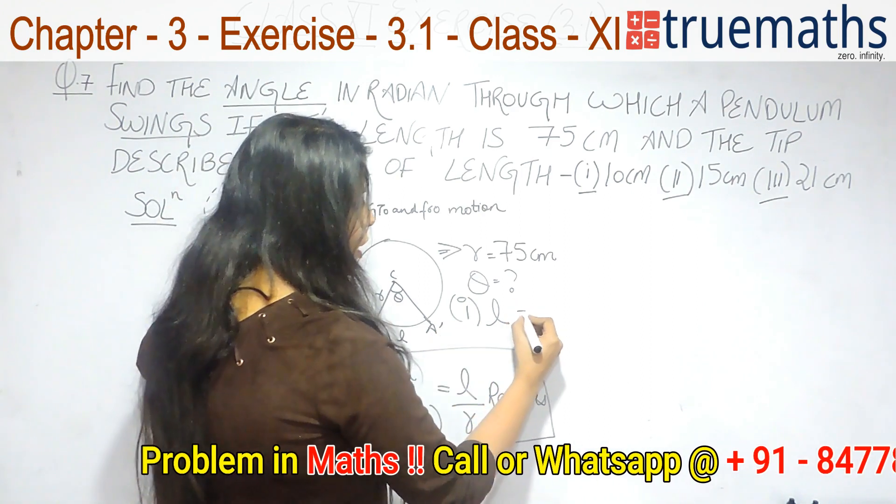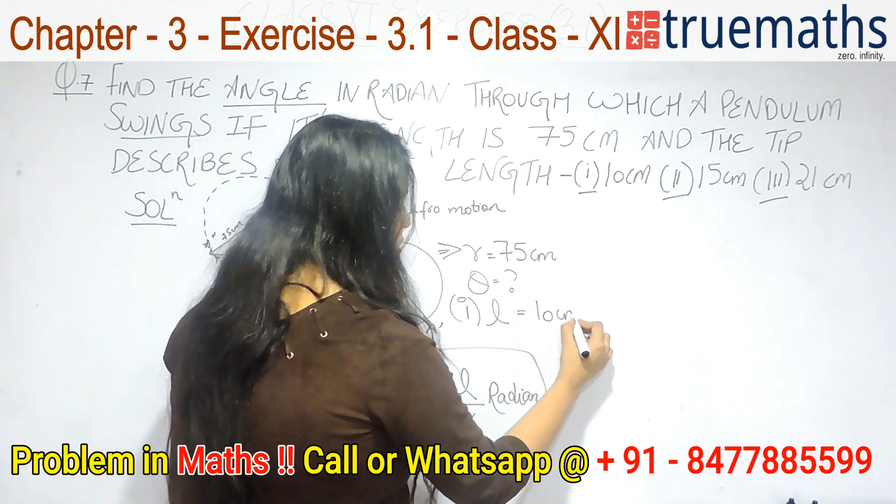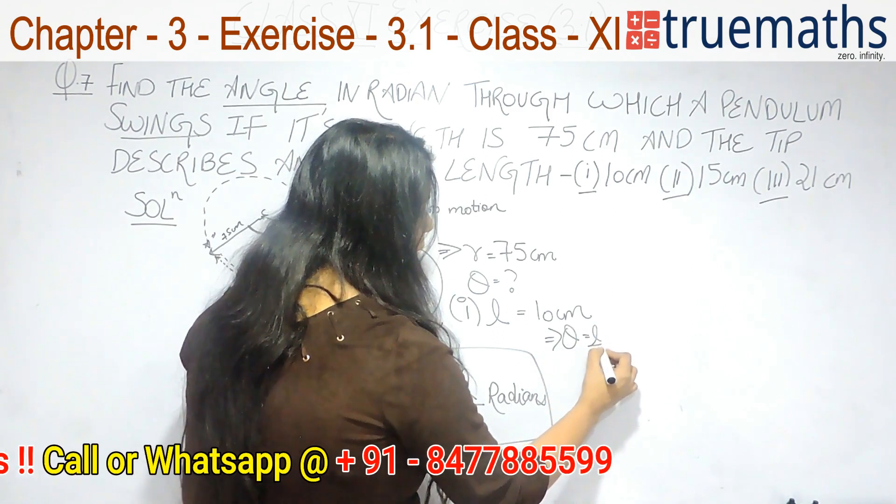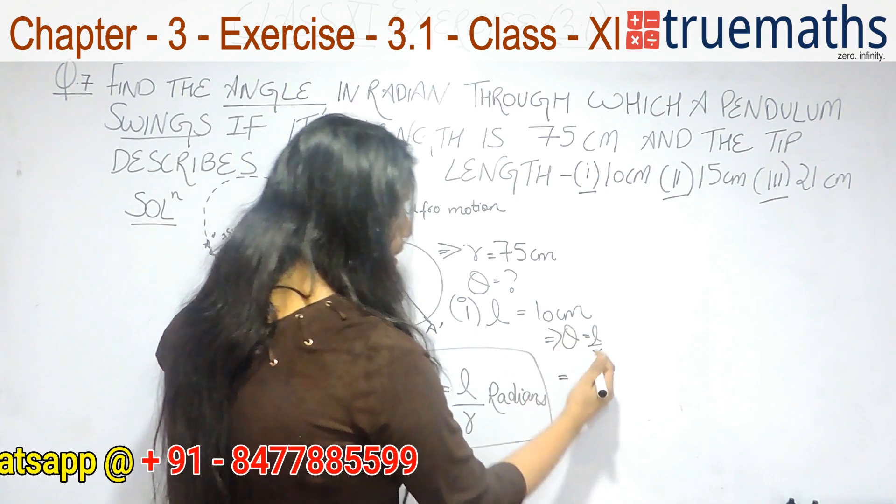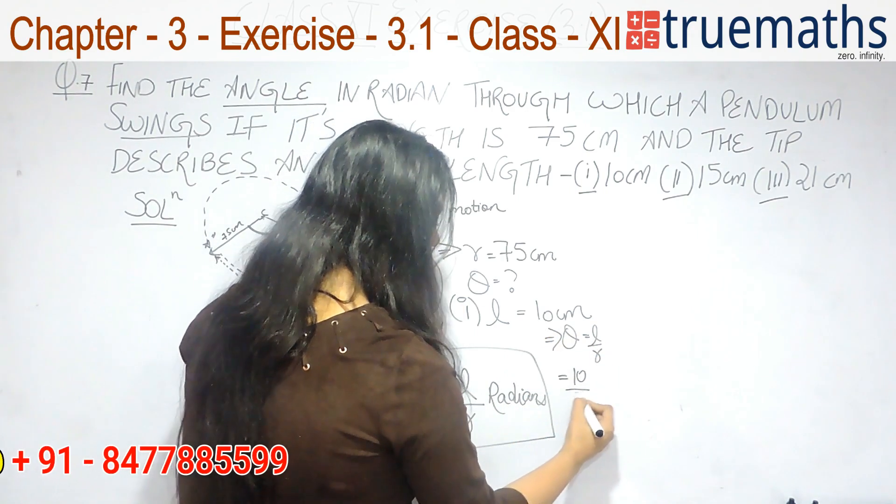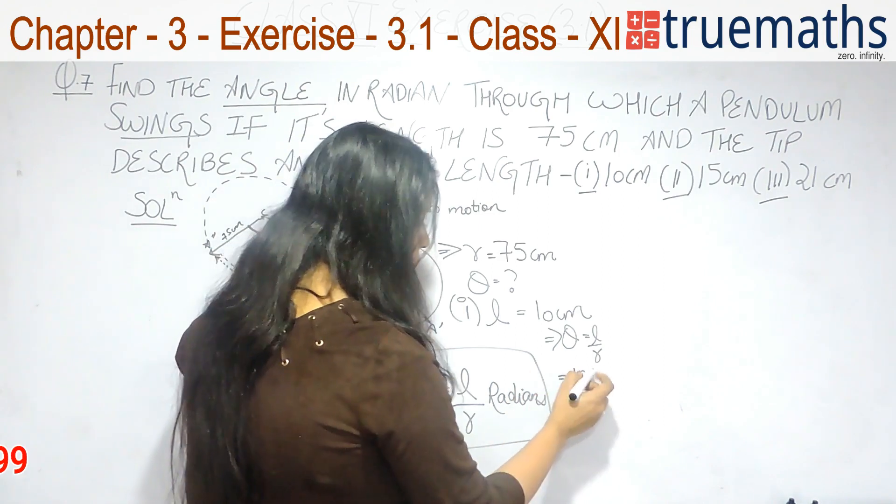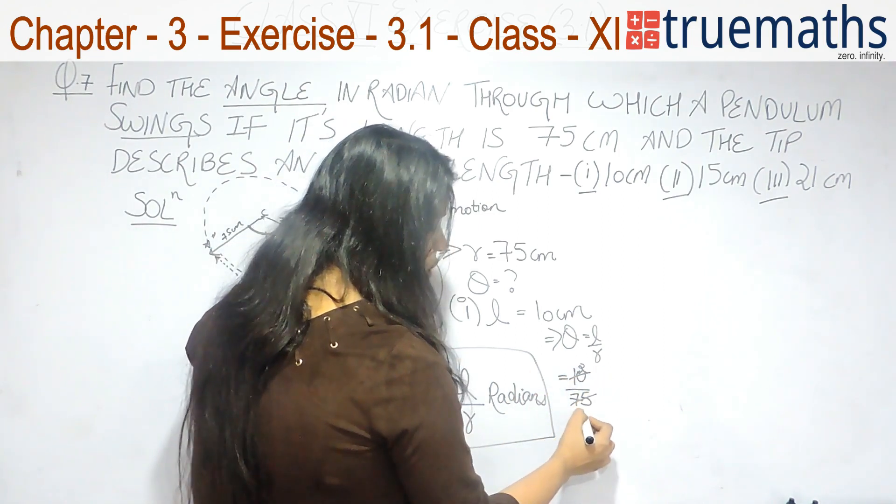So, in the first part, L value is given as 10 cm. By the formula theta equals L by R, you can say that L is 10, R is 75. It gets cancelled by 5.